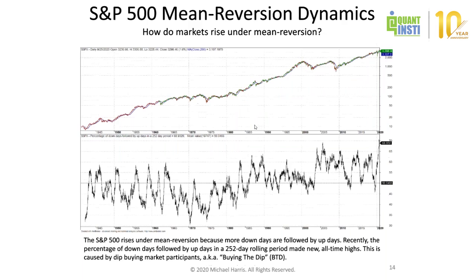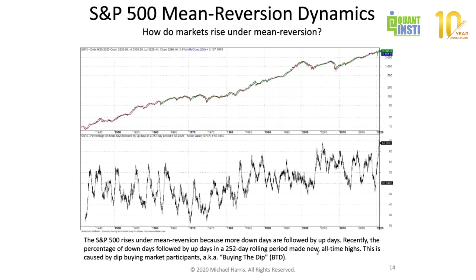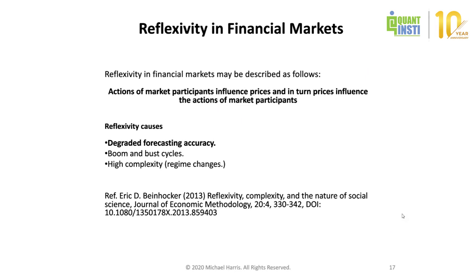This is the reason mean-reverting markets go up. The S&P 500 rises under mean-reversion because more down days are followed by up days. Recently, the percentage of down days followed by up days in a 252-day rolling period reached new all-time highs at about 69%. This is caused by participants buying the dips. People buy the dips, they make money, and the market goes up — everyone is happy.